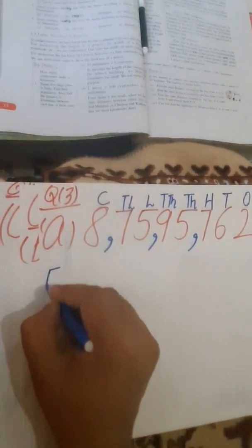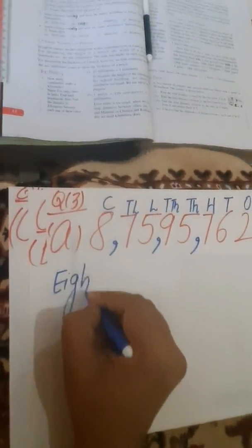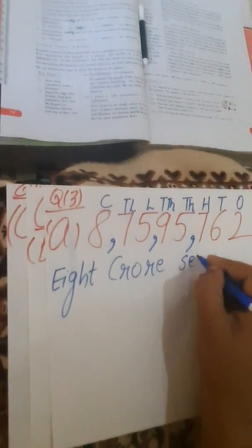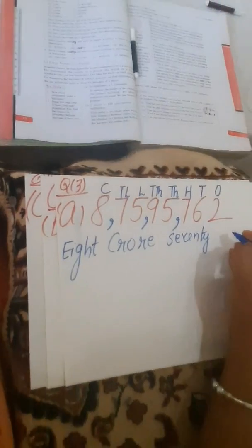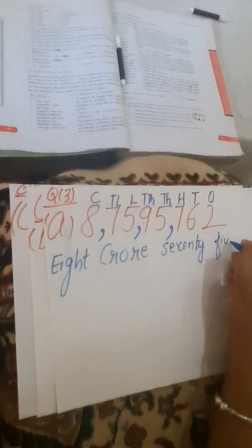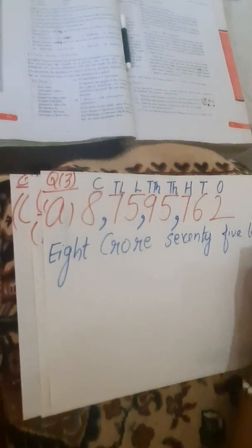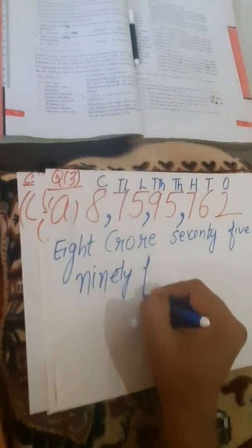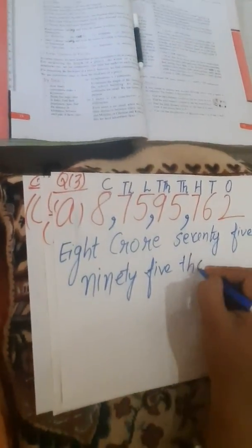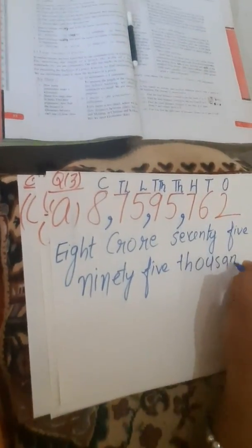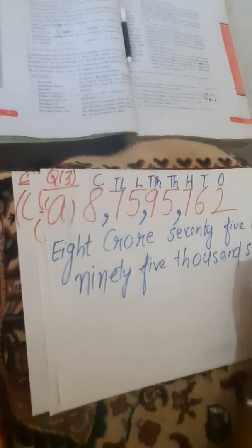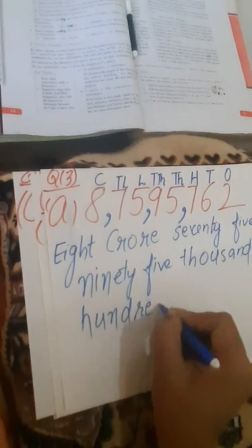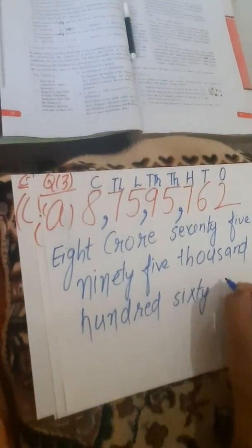Now I have to write in words. So I will write: 8 crore, 70 lakh, 5 lakh — that is 75 lakh — 90 thousands, 5 thousands — that is 95 thousands — 7 hundreds, 60 tens, 2 ones. So the number in words is: 8 crore 75 lakh 95 thousand 7 hundred 62.